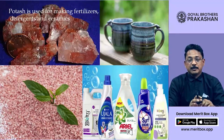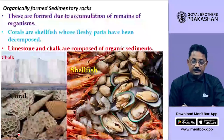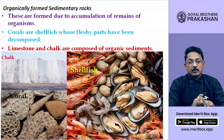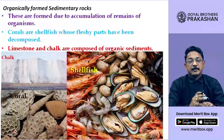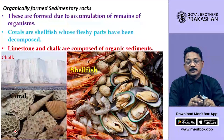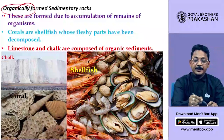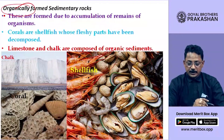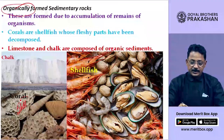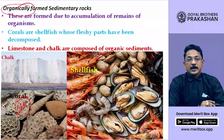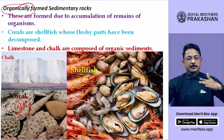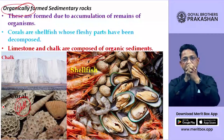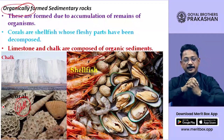Now let us look at organically formed sedimentary rocks. The ones we just saw were formed by physical processes — physically formed sedimentary rocks. Now we look at organically formed sedimentary rocks. You must recognize these as shells of animals. When shells are deposited, they break down over time, or many shells together get compacted because of the high pressure of water from the top layer, resulting in their formation.